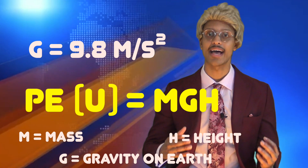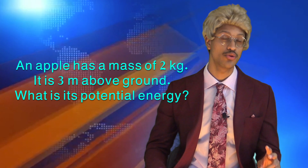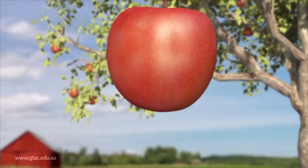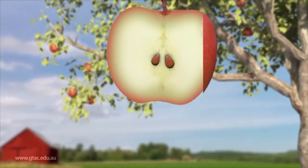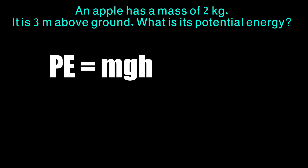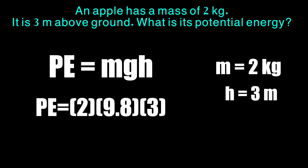Let's do some problems where we calculate the potential energy of a given object. An apple has a mass of 2 kilograms. It is 3 meters above ground. What is its potential energy? We need to remember our formula: PE equals mgh. The mass is 2 kilograms, the gravitational acceleration on Earth is 9.8 meters per second squared, and the height is 3 meters. If we plug all three of those values into the formula, we'll arrive at our answer.